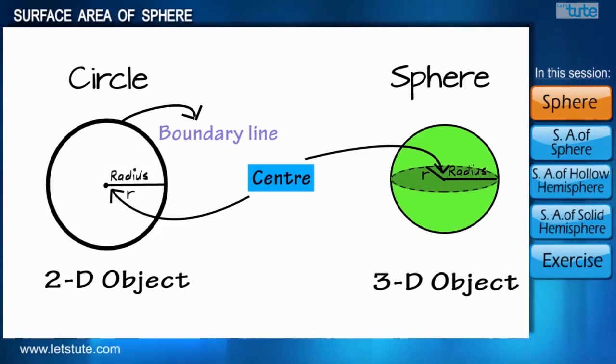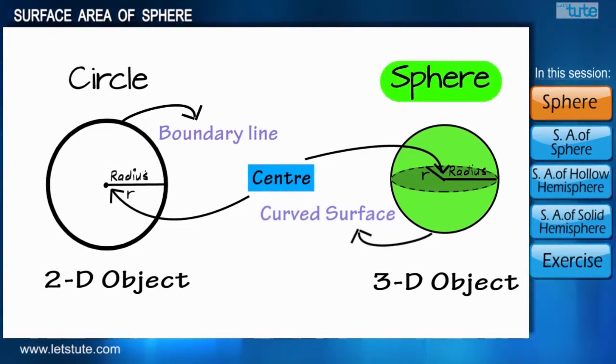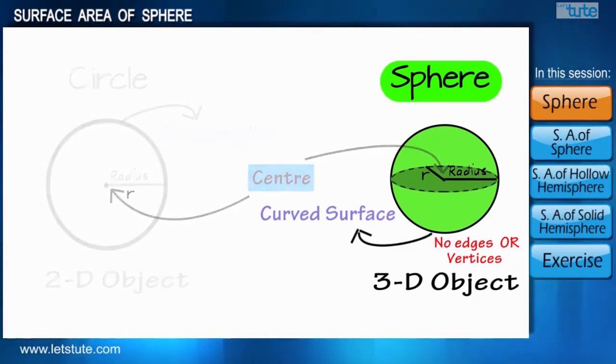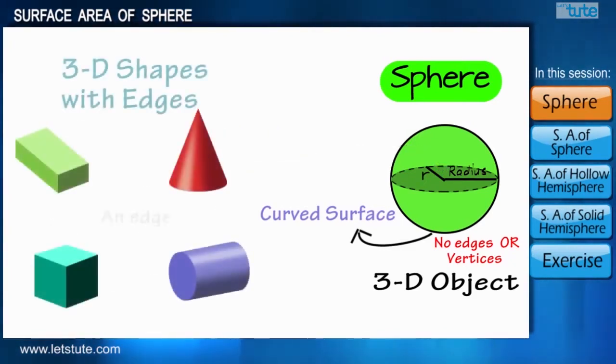A sphere is quite different from other three-dimensional objects. Friends, a sphere has no edges or vertices, therefore the entire surface is included as only one surface, whereas other three-dimensional objects have edges which further divide their entire surface into a number of different surfaces.